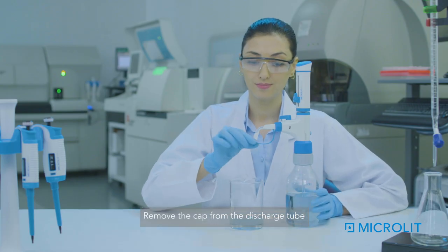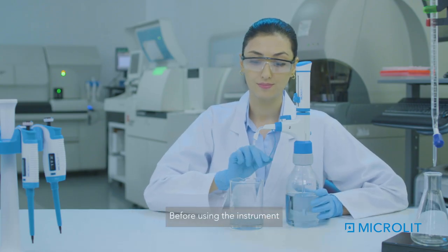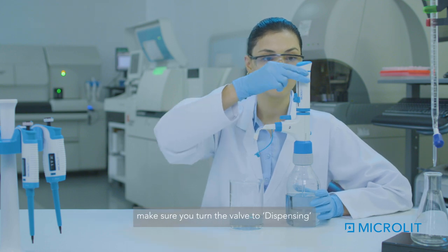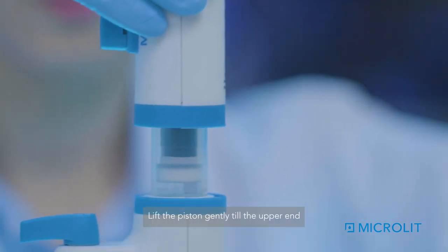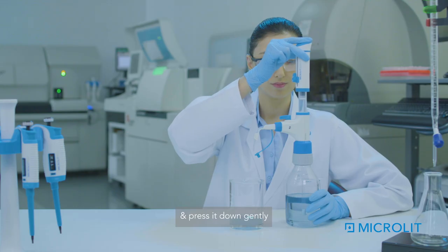Remove the cap from the discharge tube. Before using the instrument, make sure you turn the valve to dispensing. Lift the piston gently till the upper end and press it down gently.